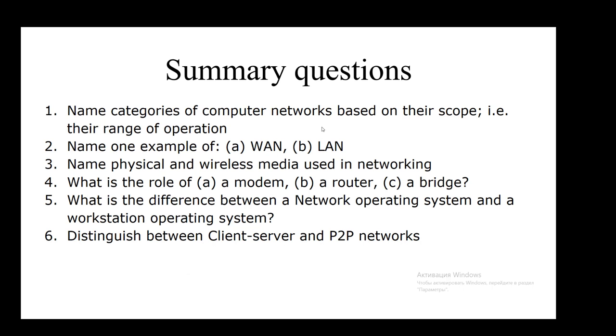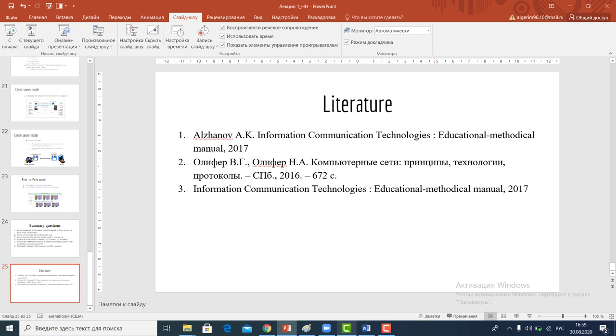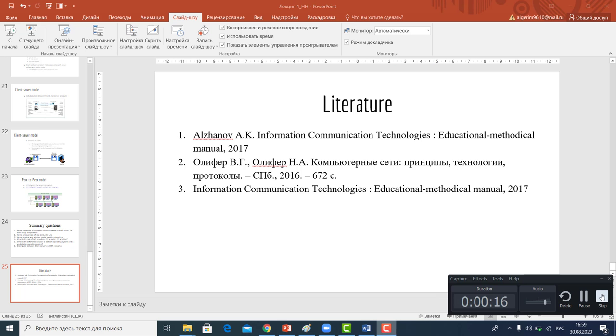So now let's talk about summary questions. At the end of the lecture you should answer these questions. For example, the first one: name categories of computing networks based on their scope. All answers to these summary questions are listed. And the literature for our course is the following: Aljanov, Information Computer Communication Technologies, Olifer, and the third, Information Communication Technologies. Thank you for your attention.